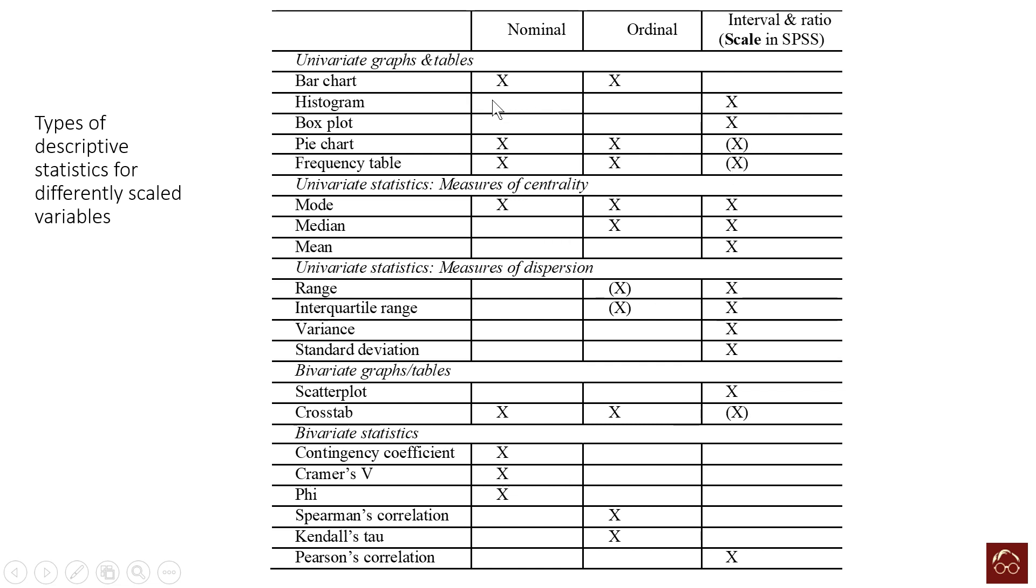Here the blanks represent invalid, the cross represents valid and applicable, and the ones with cross and bracket means we can do it but it will not give any meaningful information.